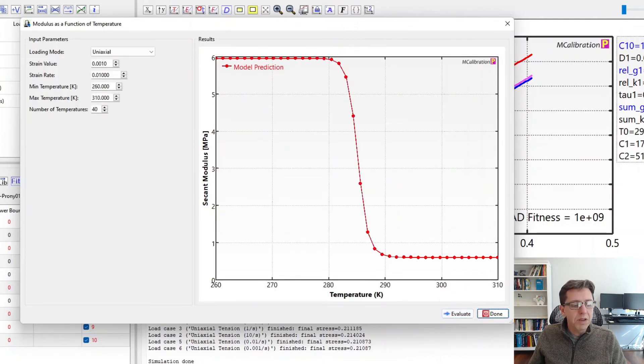And this shows with these particular parameters here, we get the secant modulus that is almost constant until we reach a certain temperature at which it drops a lot.